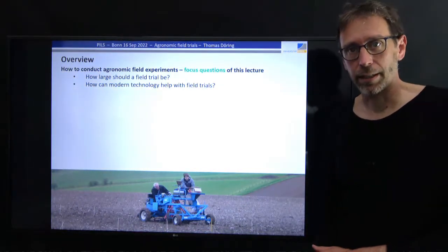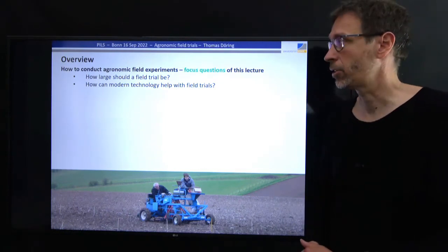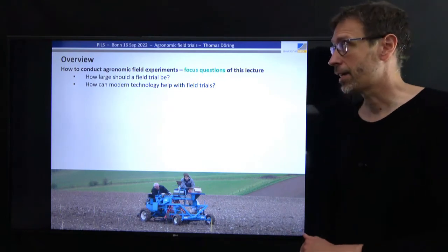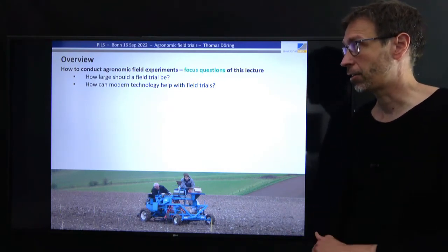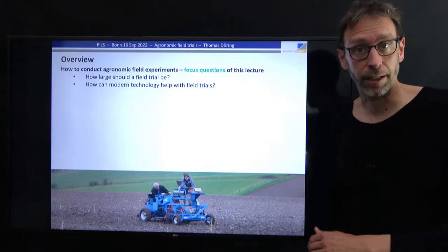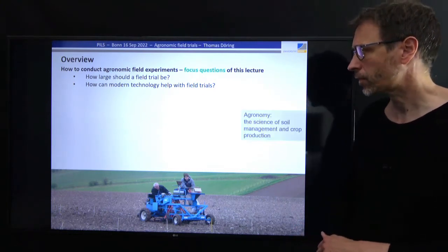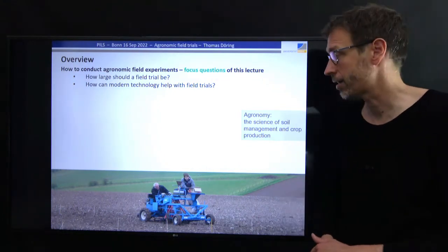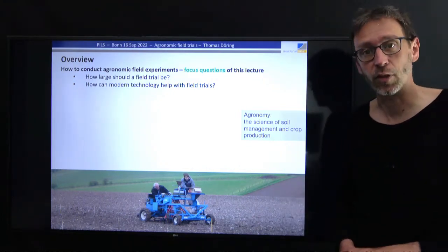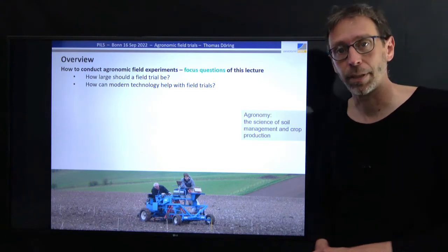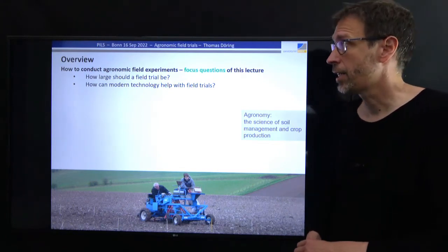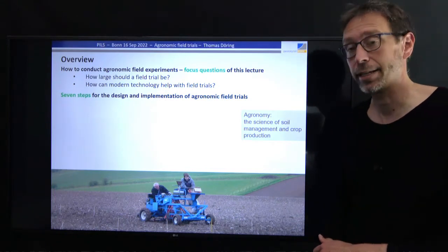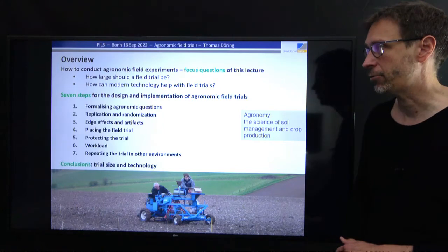There will be some recurring questions throughout my talk. One is how large should a field trial actually be, and the other one is can modern technology help with conducting such field trials. Agronomy is the science of soil management and crop production or crop cultivation, and my talk will be structured around seven steps for the design and implementation of agronomic field trials.